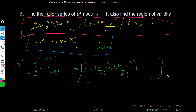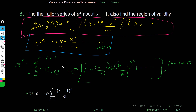What about the region of validity? In this case the region of validity has mod x less than infinity, so here it becomes mod (x−1) less than infinity. This is the same as the entire real numbers. So this expansion is valid for all real numbers. The compact form is e times sigma n equals 0 to infinity of (x−1)^n over n factorial, and this is valid for all real numbers.